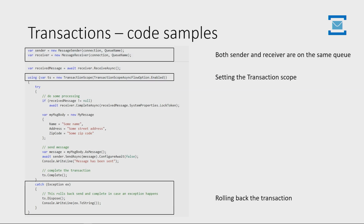In the code sample, you make sure the sender and receiver are on the same queue, start the transaction scope, do all the processing, and then complete the transaction scope. There's also an exception block you can use to roll back everything if it fails.